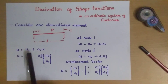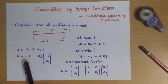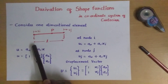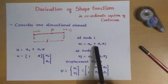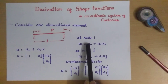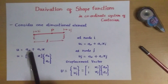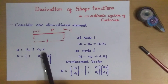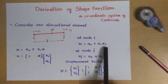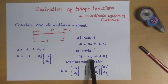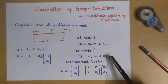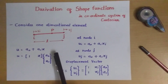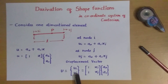Now we simplify this equation at each node. At node i, the deformation is ui = a0 + a1·xi. Similarly, for node j, uj = a0 + a1·xj — the same equation with coordinate value changed. The total displacement vector for this element is capital U, written as the column matrix [ui, uj].